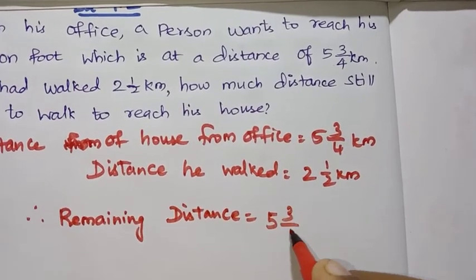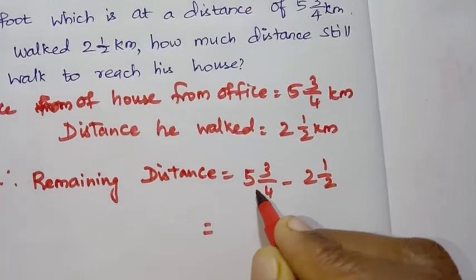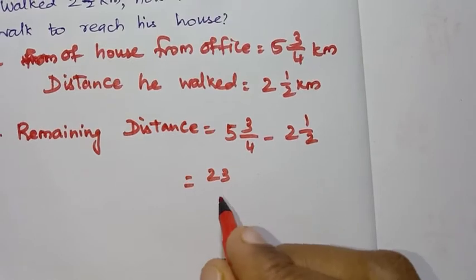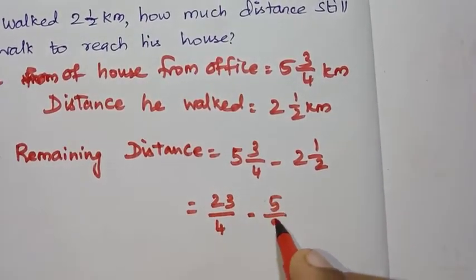5 3/4 minus 2 1/2. As usual, convert to improper fractions: 5 times 4 is 20, 20 plus 3 is 23, so 23/4. Then 2 times 2 is 4, 4 plus 1 is 5, so 5/2.